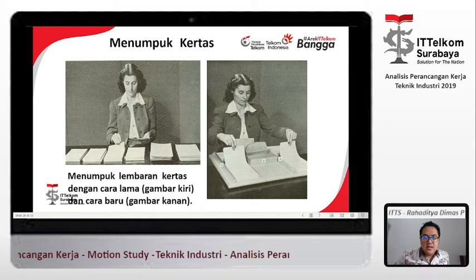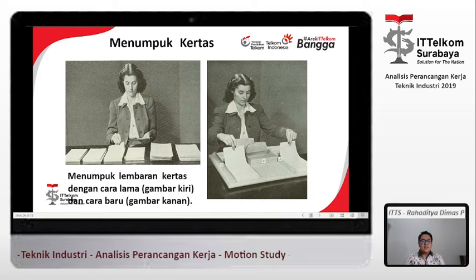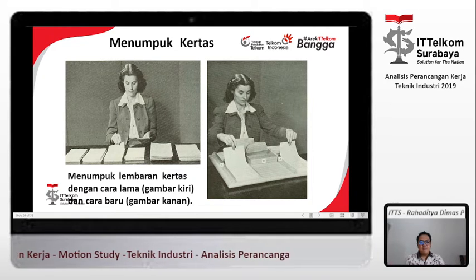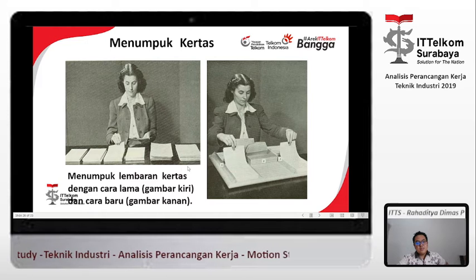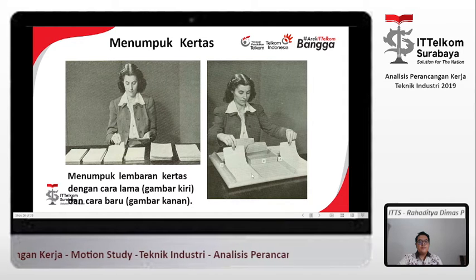Ada cara menumpuk kertas. Yang sebelah kiri terlihat konvensional — menumpuk lembaran kertas dengan cara lama, kita pisahkan satu-satu kemudian kita tumpuk. Yang gambar kanan sudah modern, kertasnya kita angkat kemudian kita tutup bersamaan sehingga tumpukan kertas bisa bergabung menjadi satu. Peletakan bendanya juga lebih efisien. Cara lama membutuhkan meja sepanjang ini, cara baru mungkin butuh setengahnya. Ini merupakan inisiatif perbaikan metode.